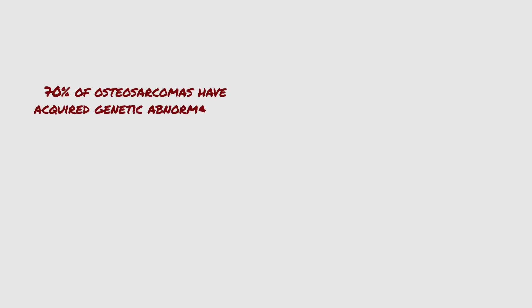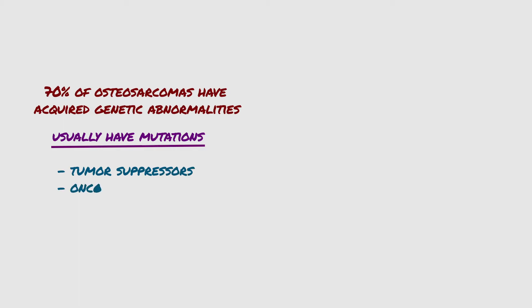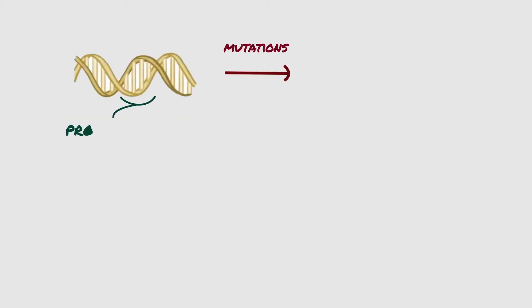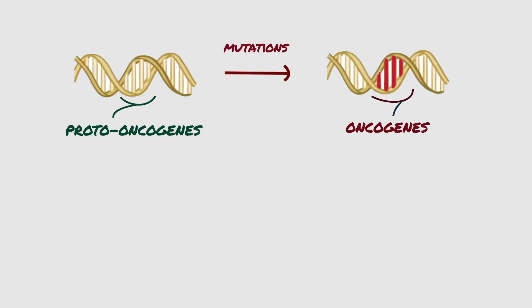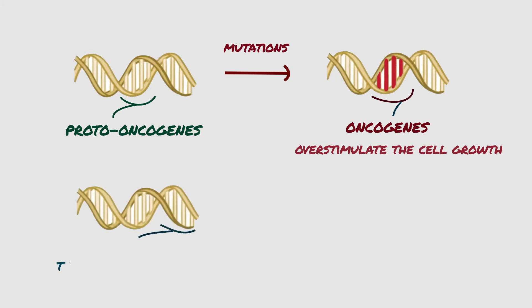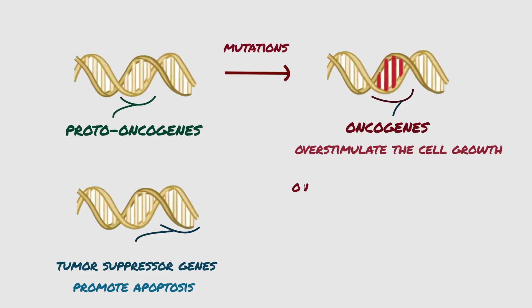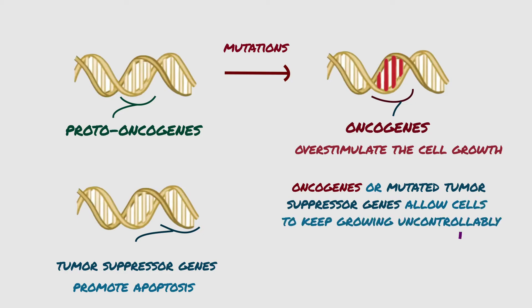Approximately 70% of osteosarcomas have acquired genetic abnormalities such as complex structural and numerical chromosomal aberrations. Molecular studies have shown that these tumors usually have mutations in well-known tumor suppressors and oncogenes. With mutations, proto-oncogenes become oncogenes and these overstimulate cell growth. To balance out cell growth, tumor suppressor genes promote apoptosis or cell death of mutated cells. Oncogenes or mutated tumor suppressor genes allow cells to keep growing uncontrollably, resulting in tumors.